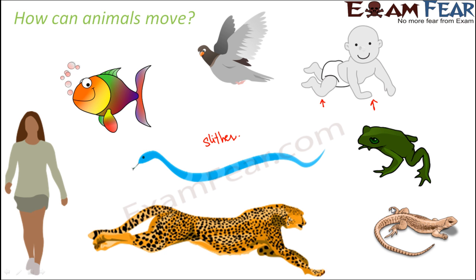Slithering is about sliding by twisting or waving the body on a surface. If you have ever seen a snake moving, it doesn't move in a straight line — it keeps waving its body like a wave. That type of movement is called slithering. So different animals have different kinds of movements: some can run, walk, jump, fly, swim, crawl, or creep. It depends on the structure of the organism and its adaptation.